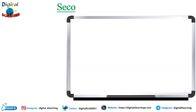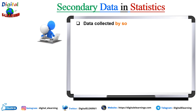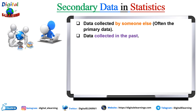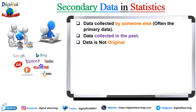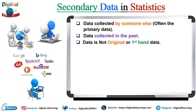Secondary data, on the other hand, is data that has already been collected by someone else — often as primary data — and then reused by another researcher or entity for a different purpose. Data collected by any person, organization, or agency in the past — that is how we define secondary data. The data which was previously collected by someone for some other reason is secondary data. Here, the data is not original or firsthand, but we can still use it for our own research purpose.